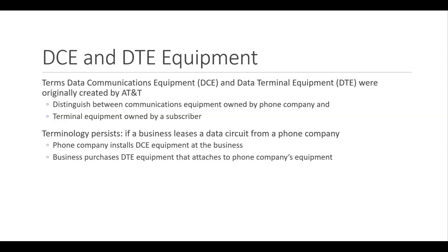A common DCE example is a modem, which acts as a translator between digital and analog signals. DCE may also be responsible for providing timing over a serial link — in a network using directly connected routers with serial links, one serial interface of each connection must be configured with a clock rate to provide synchronization. Other common DCE examples include ISDN adapters, satellites, microwave stations, and network interface cards. DCE is sometimes said to stand for Data Circuit Terminating Equipment.